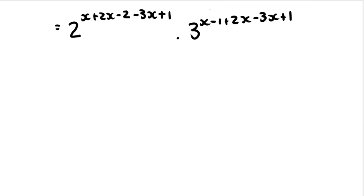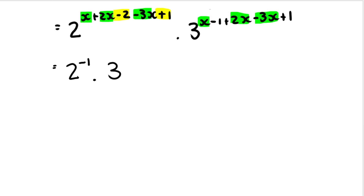We do the same with the three: x minus one plus 2x, distribute the negative into the brackets, so negative 3x plus one. Then we simplify the exponents — we do like terms in the exponent. x plus 2x minus 3x: if we have one plus two, we have three x's minus 3x, we have no x's left. And then negative two plus one gives negative one. Then for the three: x plus 2x minus 3x, we're left with no x's. And for the whole numbers, negative one plus one is zero. Two to the power of negative one is the same as one half, and three to the power of zero is one. So our answer is one half.